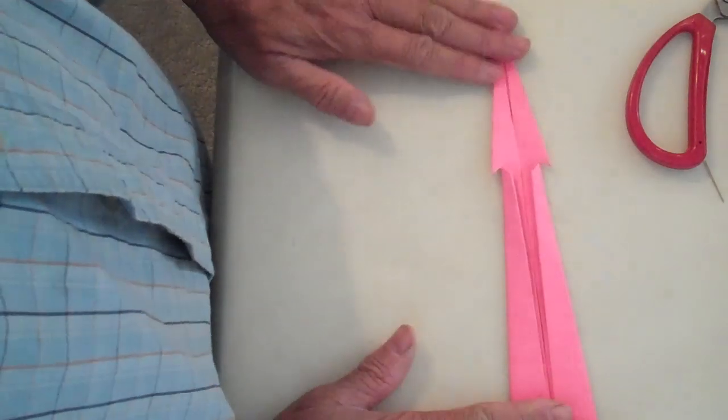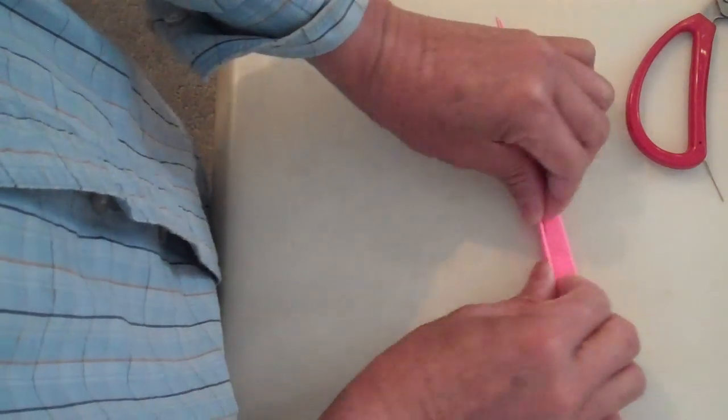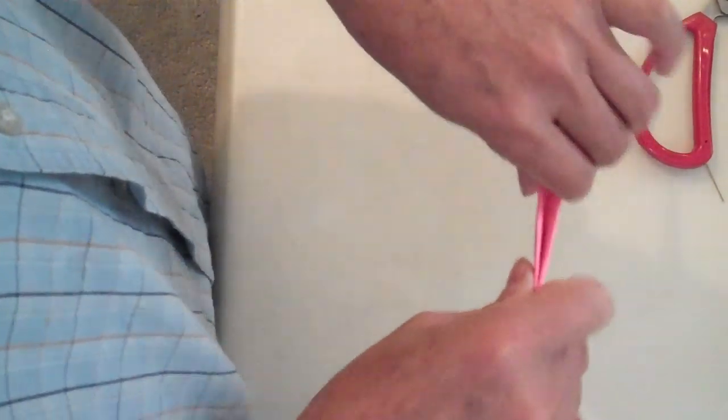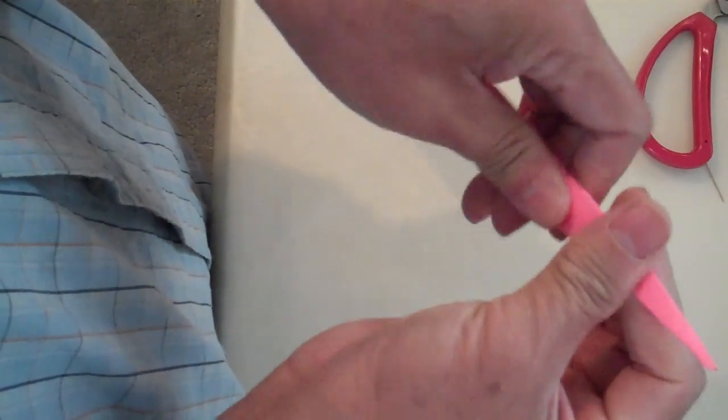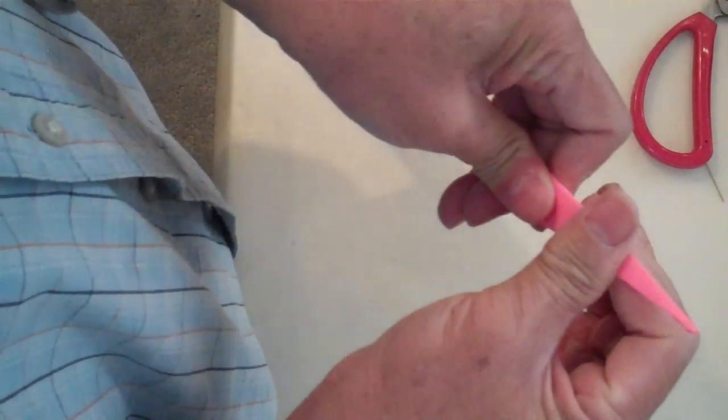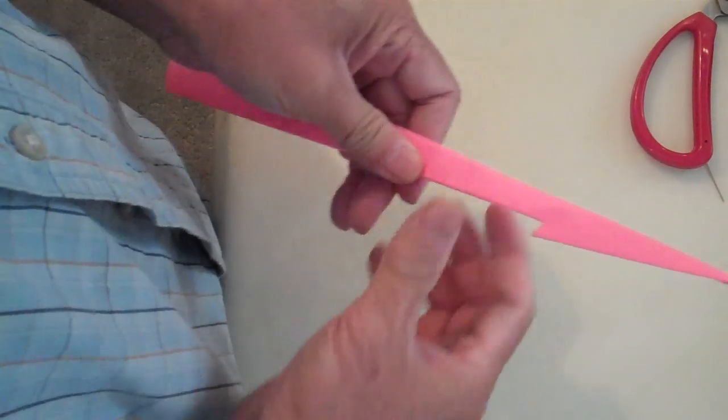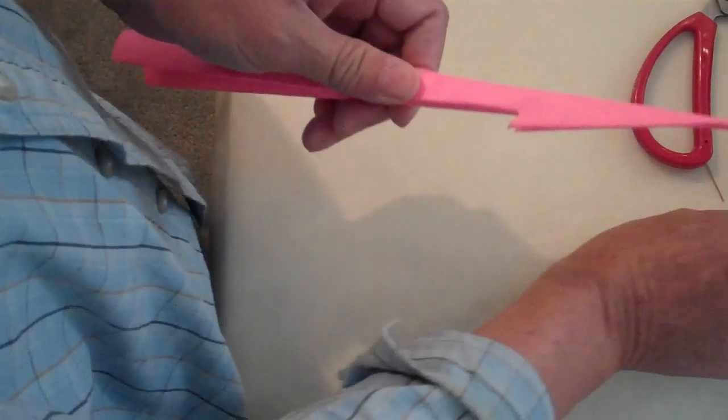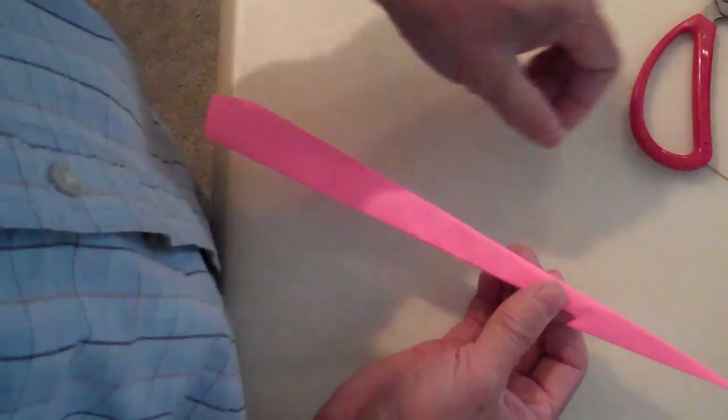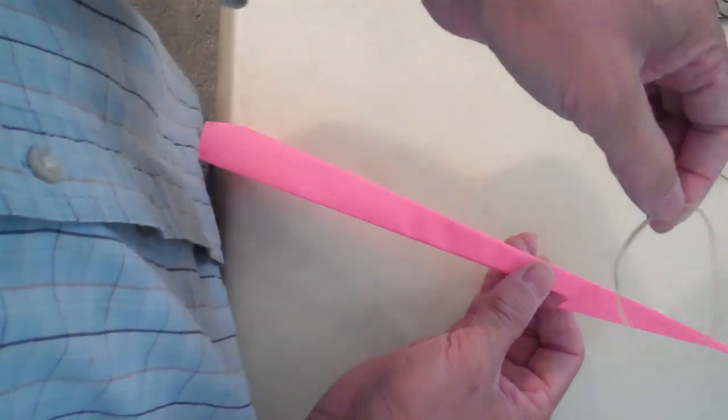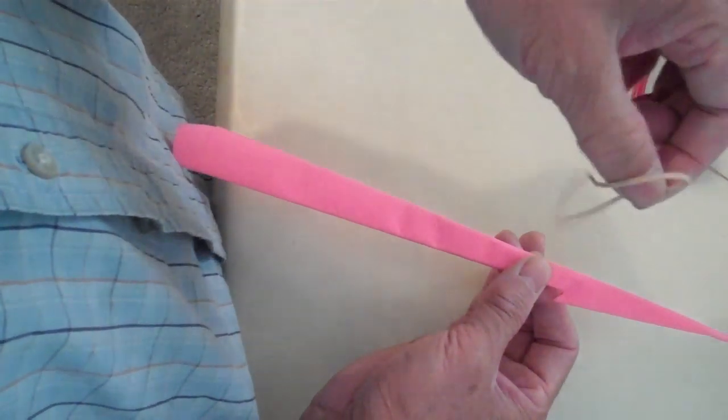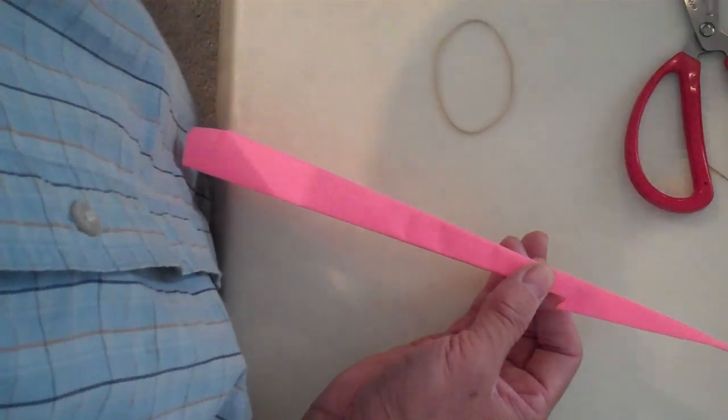So you fold it together, and you try to smooth it out. Don't bend it. And there you have it. I'm gonna shoot it with the rubber band. If you don't want it to go too far, use one rubber band. If you want it to go a little longer distance, add another rubber band.